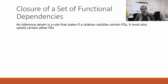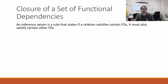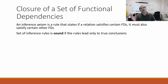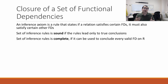One thing we need to do is figure out how we can infer new functional dependencies. The way we do this is by using what's called an inference axiom — a rule that states if a relation satisfies these FDs, it must also satisfy these other functional dependencies. A set of inference rules is sound if those rules only lead to true conclusions, meaning you can only use those rules to generate true conclusions. It's complete if they can generate everything that we care about — specifically, every functional dependency on a relation.